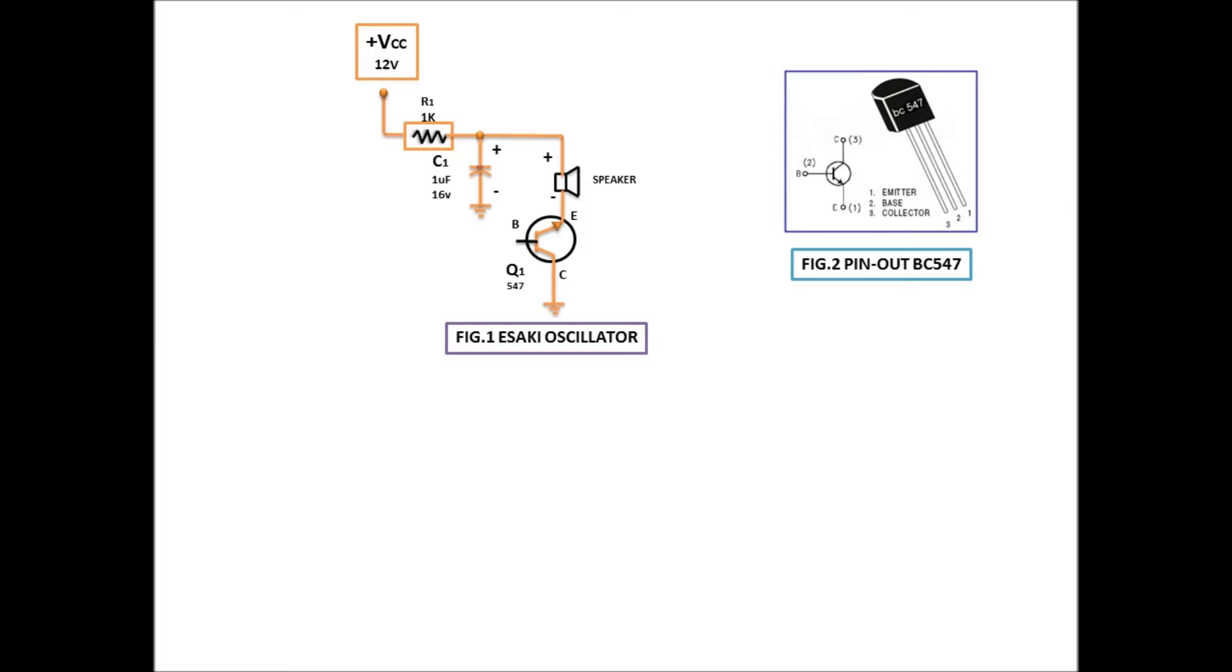Yan. Yan ang tinatawag na tunnel effect. Yung pagdaloy ng kuryente sa emitter to collector. Ang tawag dyan ay negative resistance. Pero nung nag-aaral pa ako, walang negative resistance na tinatawag. Pero dito, meron. Yung emitter to collector. Pagdaloy ng kuryente sa emitter to collector. Nagkakaroon niya ng tinatawag na transistor avalanche breakdown voltage. Dahil lang sa supply may 12 volts, kayang dumaan ng kuryente papuntang emitter, to collector, to ground. Basta ang power supply mo ay 12 volts.